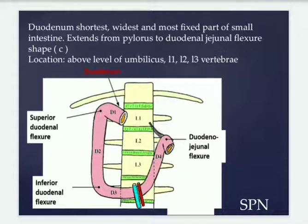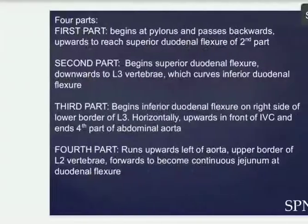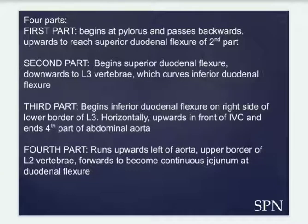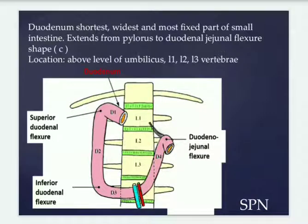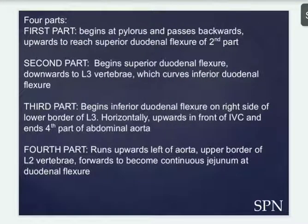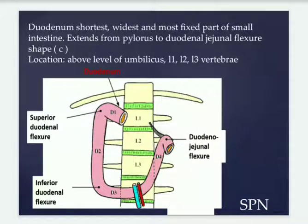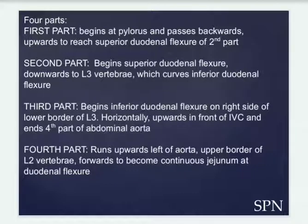The third part begins at the inferior duodenal flexure on the right side of the lower border of L3, as you can see in this picture. It passes horizontally and slightly upwards in front of the inferior vena cava. The fourth part runs upwards and to the left of the aorta, up to the upper border of L2, then turns forwards to become continuous with the jejunum at the duodenal jejunal flexure.